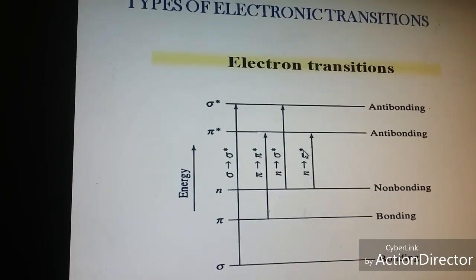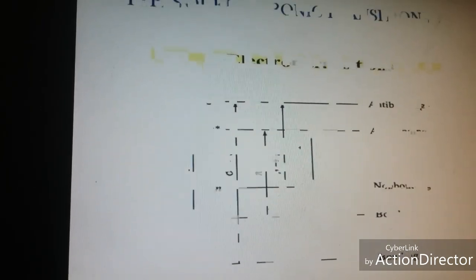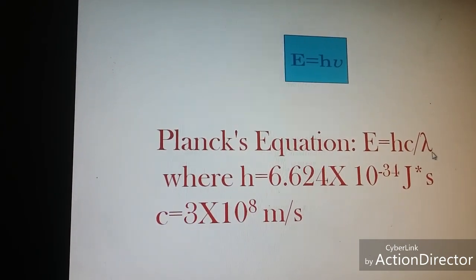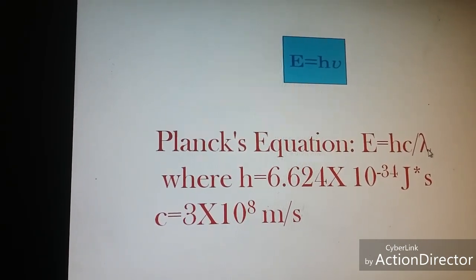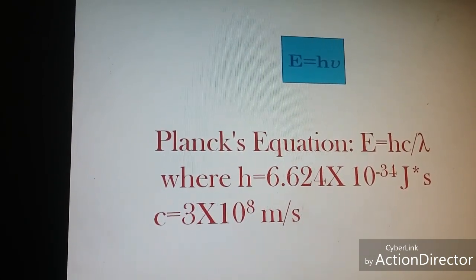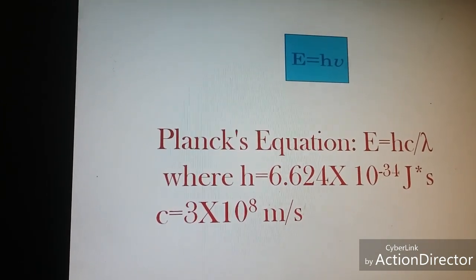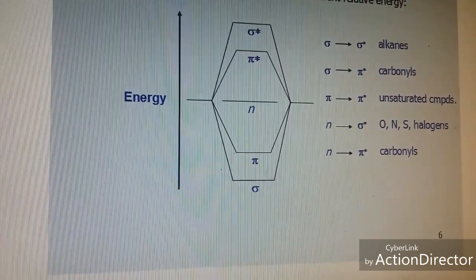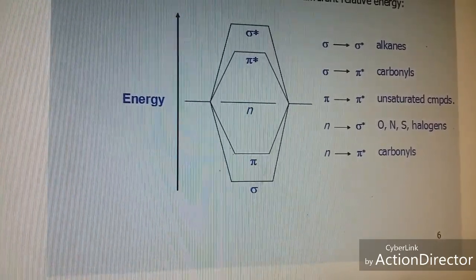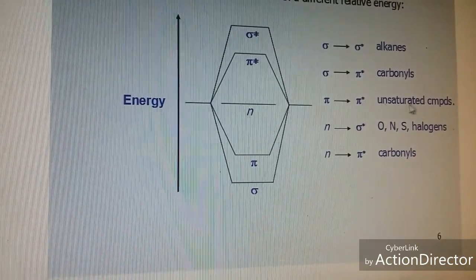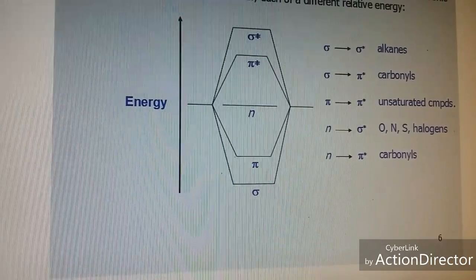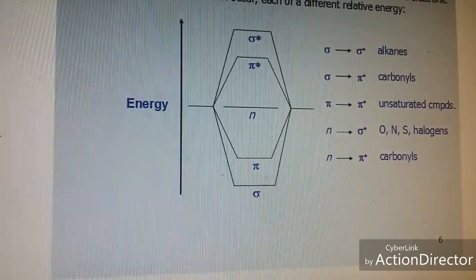These transitions depend on Planck's law: ΔE = hν or ΔE = hc/λ, so ΔE is inversely proportional to λ. Greater the energy separation between energy levels, lesser the wavelength. Sigma to sigma star transition is shown by alkanes because sigma bonding is present in alkanes. Pi to pi star transition is shown by unsaturated compounds such as those containing carbonyl groups. N to sigma star transition is shown by heteroatoms, that is atoms other than carbon and hydrogen. N to pi star transition is shown by compounds having non-bonded electrons and unsaturation.